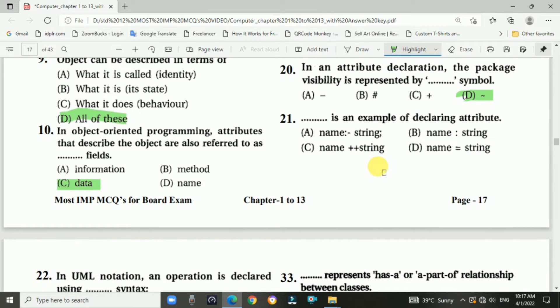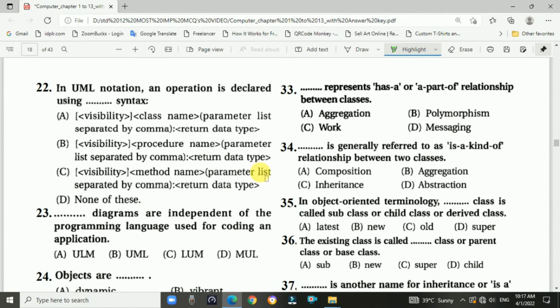Question number twenty-one: Blank is an example of declaring attribute. Answer is B, name colon string. Question number twenty-two: In UML notations, an operation is declared using blank syntax. Answer is C, visibility method name parameter list separated by comma and returns data type.